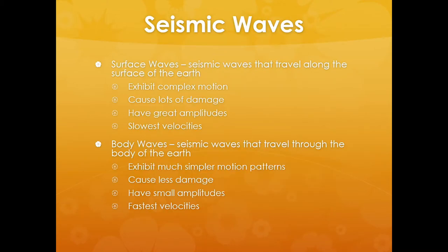There are two types of seismic waves: surface waves and body waves. Surface waves are seismic waves that travel along the surface of the Earth. They exhibit complex motion, cause lots of damage, have great amplitudes, and have the slowest velocity — which is one of the reasons they cause so much damage, because they hang around a long time. Body waves, on the other hand, are seismic waves that travel through the body of the Earth. They exhibit simpler motion patterns, cause less damage, have smaller amplitudes, and the fastest velocities.